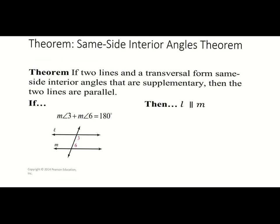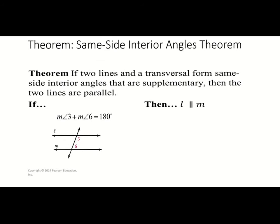The next theorem is the same side interior angles theorem. This theorem says if two lines and a transversal form same side interior angles that are supplementary — and here's the key: they are supplementary, not congruent. So same side interior angles are going to be supplementary. Then the two lines are parallel. We know we have same side interior angles and they are not necessarily congruent, but they are supplementary — they add up to 180 — so that means your lines are parallel.